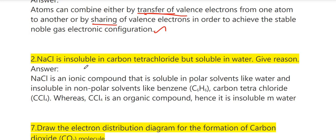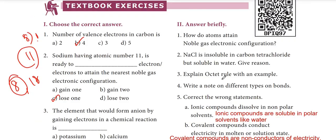Second question: NaCl is insoluble in carbon tetrachloride but soluble in water — give the reason. NaCl is an ionic compound that is soluble in polar solvents like water and insoluble in non-polar solvents like benzene. Carbon tetrachloride (CCl4) is a non-polar organic compound, hence NaCl is insoluble in it.